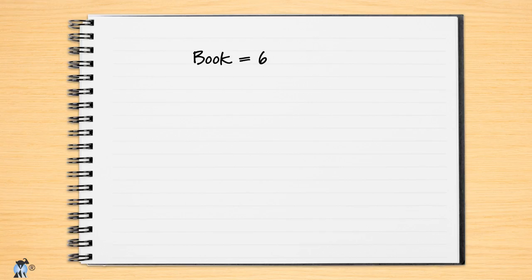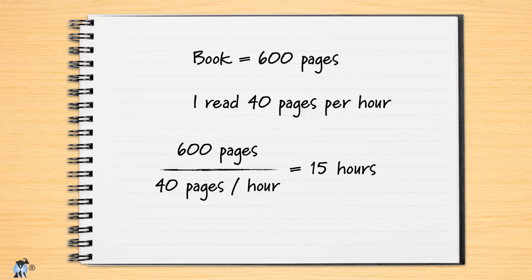Another technique you may have used is to first think about the size of the work, estimate your pace through the work, and then divide to come up with an estimate of the duration. For Harry Potter, perhaps you estimated the size of the book at 600 pages, then estimated that you read one page every minute and a half — that's 40 pages per hour. Dividing 600 pages by 40 pages per hour gives an estimate of 15 hours. You may have done something similar for driving, by estimating how many miles or kilometers away your destination was and dividing by an estimated speed per hour. In the next video, we will turn what we just learned into one of the most valuable principles of Agile Estimating.